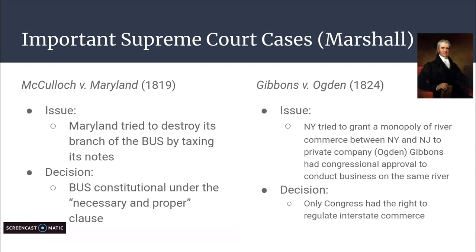Then we have Gibbons v. Ogden of 1824. The issue was that the state of New York tried to grant a monopoly of river commerce between New York and New Jersey to a private company owned by Ogden — so only Ogden could control river trade between New York and New Jersey. But Gibbons had congressional approval to conduct business on the same river. So now we have two sides: New York and Ogden versus Congress and Gibbons.